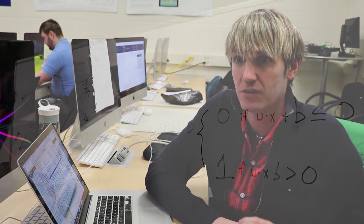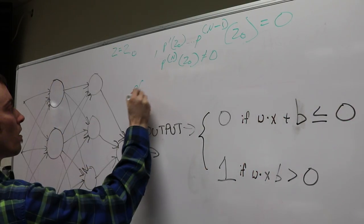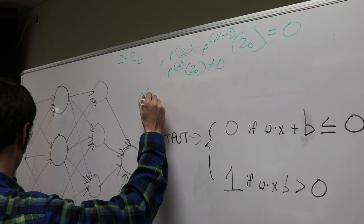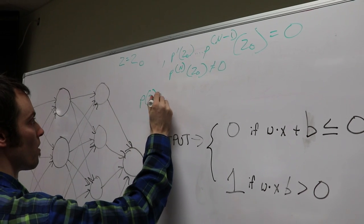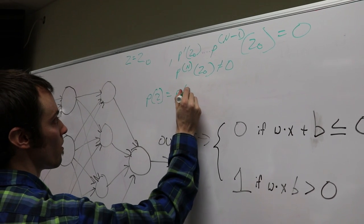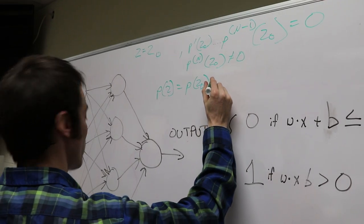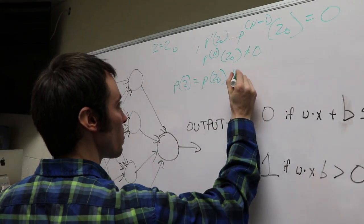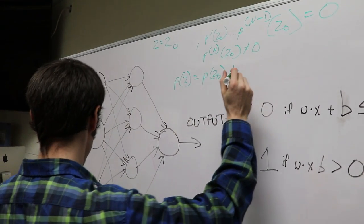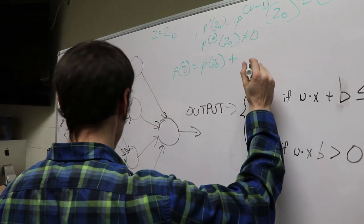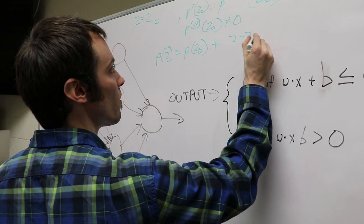We first used a cascade of many layers of nonlinear processing units for feature extraction and transformation, where each successive layer uses the output from the previous layer as input. We used supervised learning and implemented classifiers to aid the detection of password characters based on read frequencies of the device.